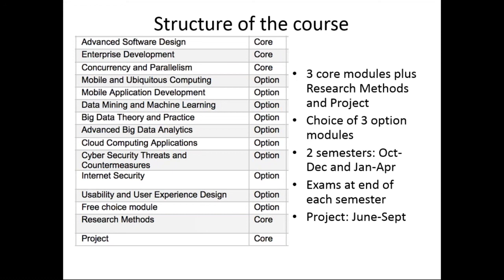You get a choice of three options from the lists provided. We run in two semesters: the first semester October to December, the second January to April. Over the two semesters you'll do the three core modules, research methods, and your three options. Each module contains exams at the end of each semester. The project is done between June and September, with the hand-in date sometime mid-September, shortly followed by an oral viva.